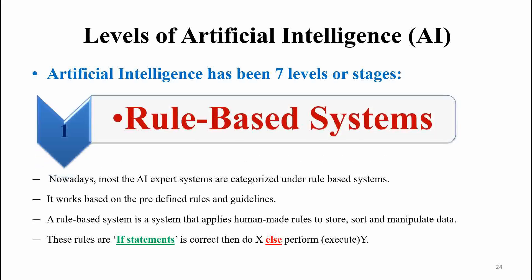Let's know about those. The first one is rule-based systems. Nowadays most of the AI expert systems are categorized under rule-based systems. Rule-based systems are a type of expert system which is structured and works based on predefined rules and guidelines. The system operates on predefined rules and guidelines.